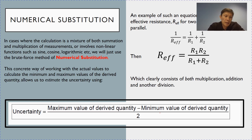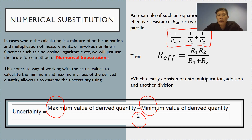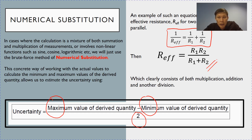For numerical substitution, the uncertainty is given by taking the maximum value, subtracting the minimum value, and dividing by 2. This gives an estimate of the final uncertainty. Let's use parallel resistance as an example. The effective resistance for two resistances connected in parallel can be rewritten in a form that consists of a mixture of multiplication, division, as well as addition and subtraction.